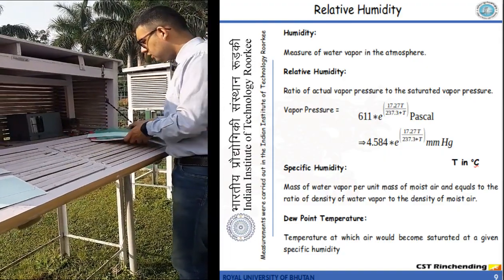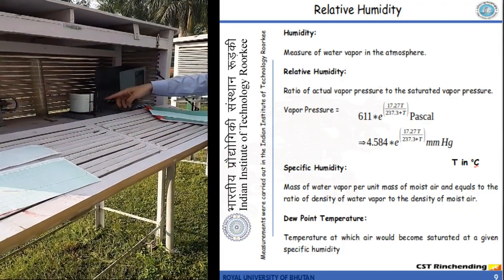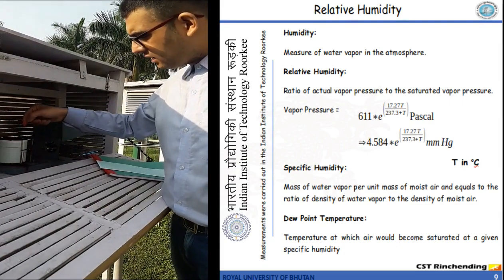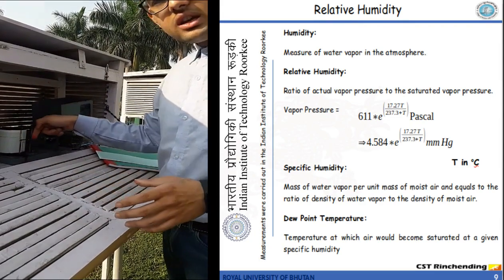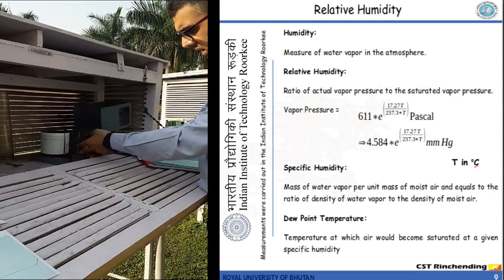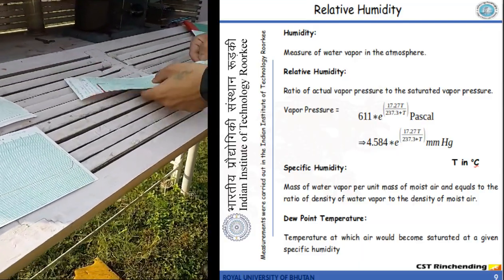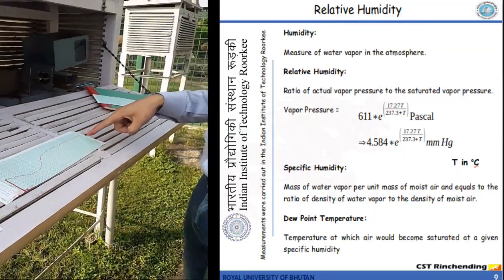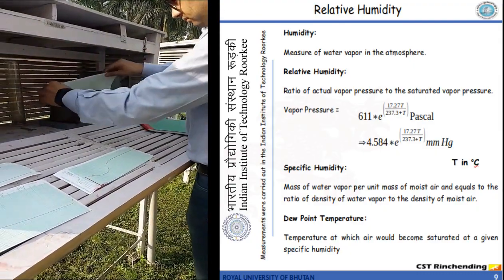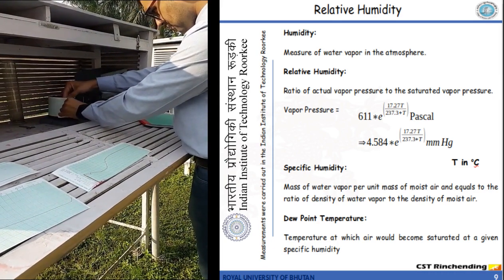Here we have an instrument to measure relative humidity. I remove the covering and you can see the arrangement: there is a small arm with ink and a drum that rotates. As time progresses, it measures the relative humidity and marks on the chart. To remove the chart, I gently turn this arm forward, remove the clip, take out the chart, and see the variation of relative humidity since yesterday. Then I fix a new chart back in place.